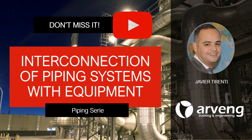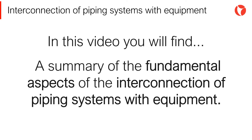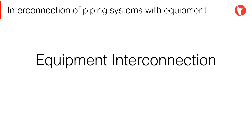Hi there, you are watching a video of piping systems in industrial plants. The main function of a piping system is to interconnect the different equipment in a plant. Some particular interconnecting details for the main equipment in a plant will be discussed.